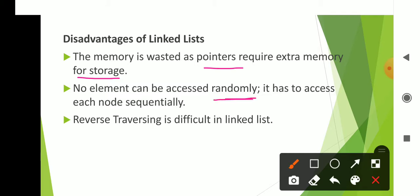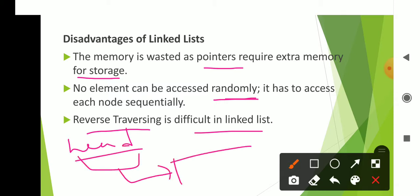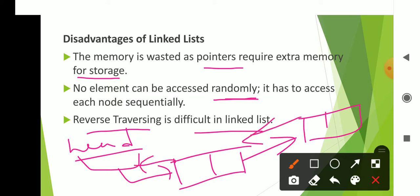No elements can be accessed randomly — there is no direct access. Linked list is a linear data structure where elements are stored and accessed sequentially, one by one. Reverse traversing is also difficult in a singly linked list, because links only go in the forward direction; there is no backward link.